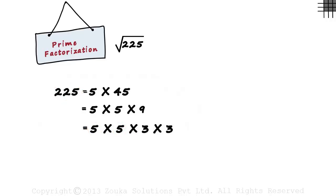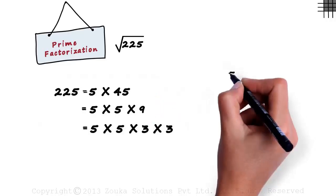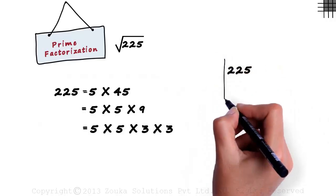Let's look at a quicker way. We write 225 like this and draw two lines here, like this.